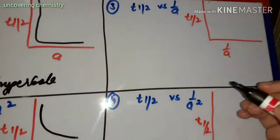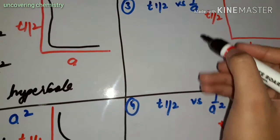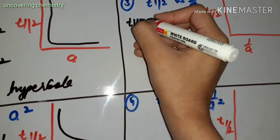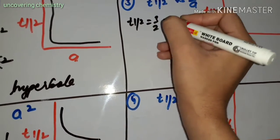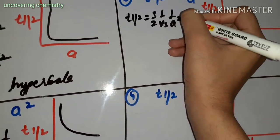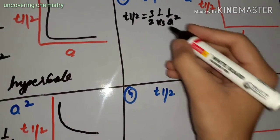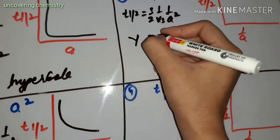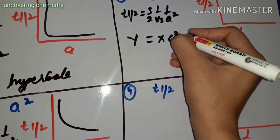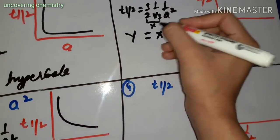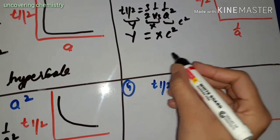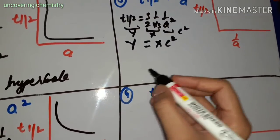The next graph is T-half versus 1 upon A. From the equation T-half equals (3/2) times (1 upon K3) times (1 upon A squared), substituting 1/A as X gives T-half equals C times X squared. This is a parabola-type graph, so the graph between T-half versus 1/A is a parabola.